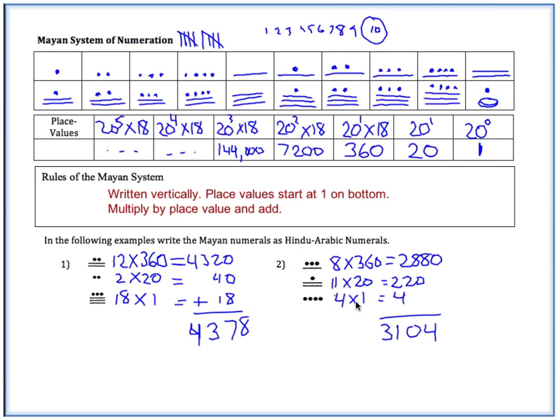Alright, welcome back. So you should have gotten 4 times 1, 11 times 20, 8 times 360. And all of this adds up to be 3,104.